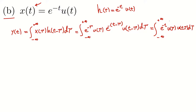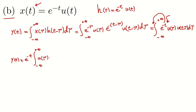Since e^(-t) is not a function of τ, I can take it outside the integral. So y(t) equals e^(-t) times the integral from minus infinity to infinity of u(τ) · u(t - τ) dτ.